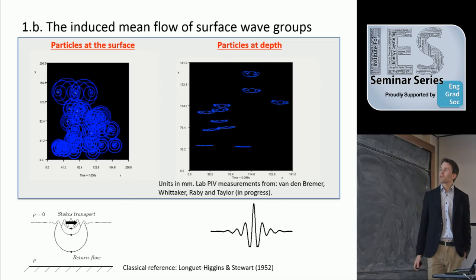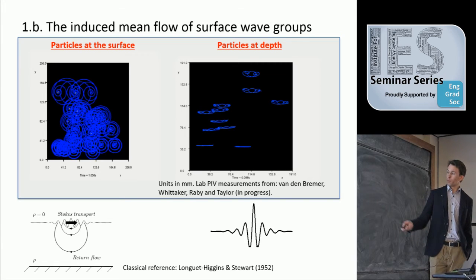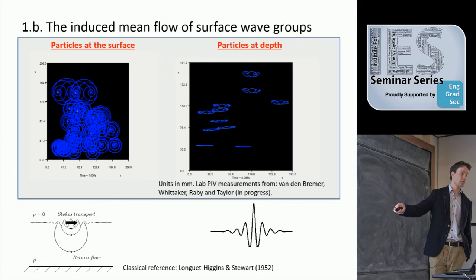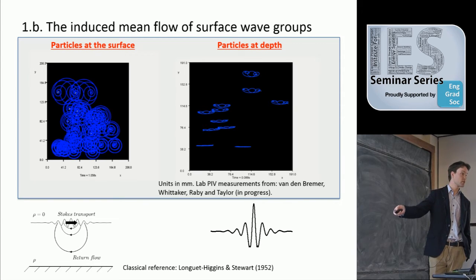What happens if we replace a periodic wave by a wave group — so we replace a purely periodic wave by a wave packet? What turns out to happen is that the Stokes drift, this transport in the direction to the right, has to have — if we look at the proper conservation equations — a flow in the opposite direction, known as a return flow. Together, these make for a balanced flow system.